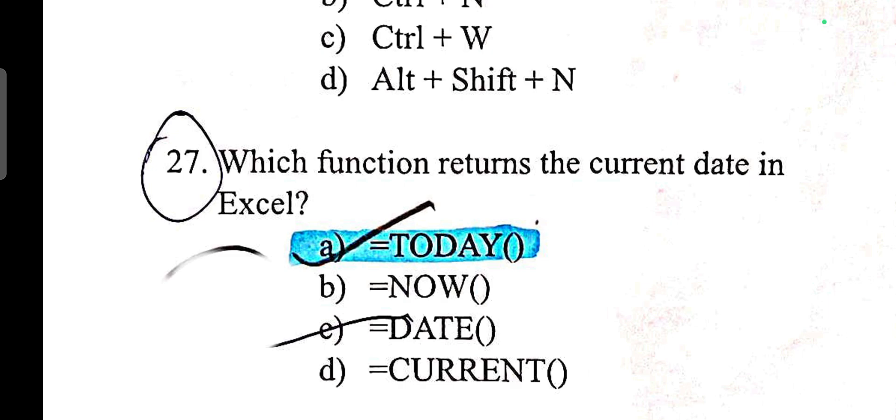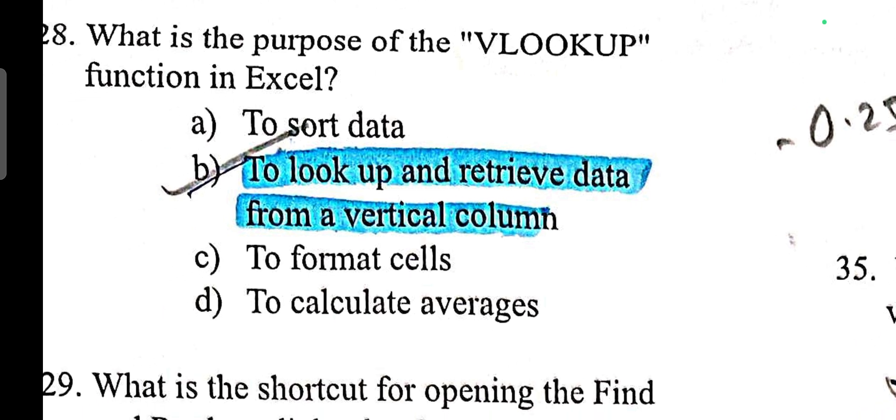Which function returns the current date in Excel? Today. Now function gives Excel current date and time. VLOOKUP is used to look up and retrieve data from a vertical column.